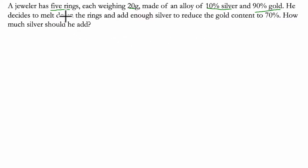He decides to melt down the rings and then add silver. I'm going to underline that because I see silver popping up twice already. And to reduce the gold content, with gold popping up twice as well, to 70%, how much silver should he add?